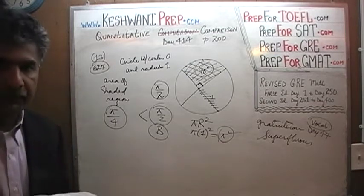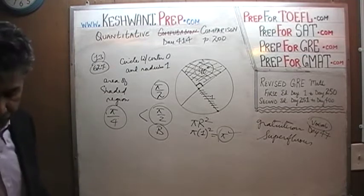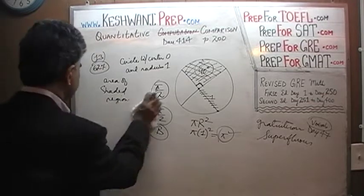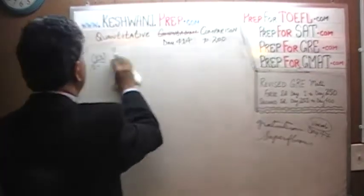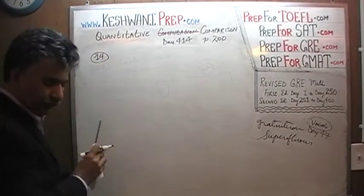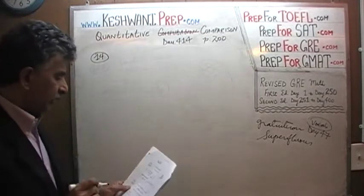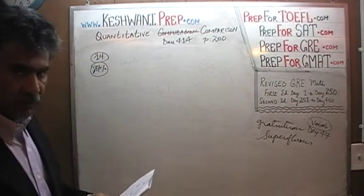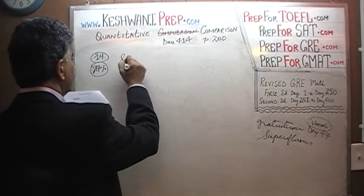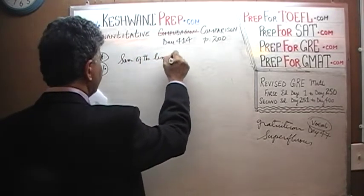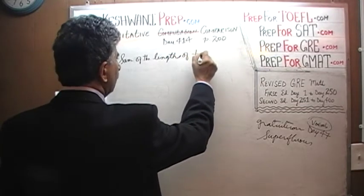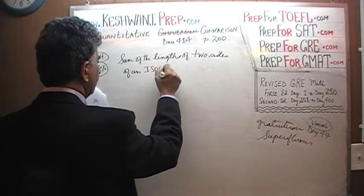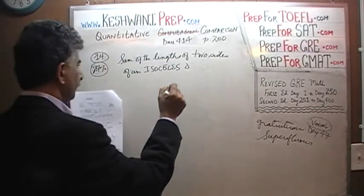Let's go on to the next one — number 14, the penultimate one. The percentage drops all the way from 62% to 24%. It's very important that you pause the video immediately and do this problem yourself. Here's what we are told: the sum of the lengths of two sides of an isosceles triangle is 7.